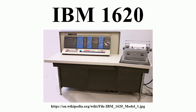The successor to the 1620, the IBM 1130, was based on a totally different 16-bit binary architecture. IBM supplied the following software for the 1620: 1620 Symbolic Programming System, Fortran, Fortran 2 (required 40,000 digits or more of memory), GOTRAN (a simplified interpreted version of Fortran for load-and-go operation), Monitor 1, Monitor 2, and disk operating systems. The monitors provide disk-based versions of 1620 SPS IID, Fortran IID, as well as DUP.